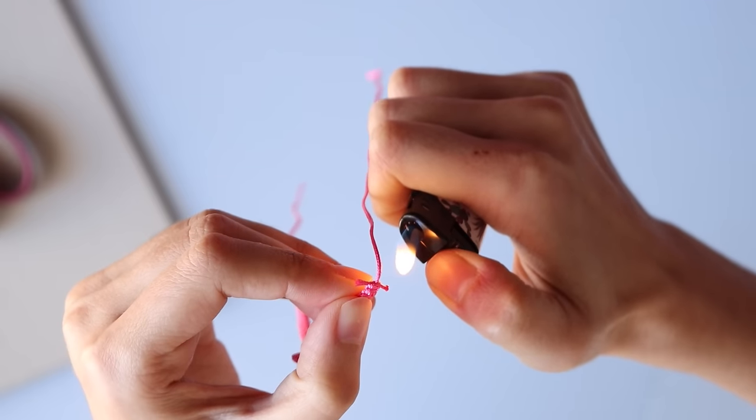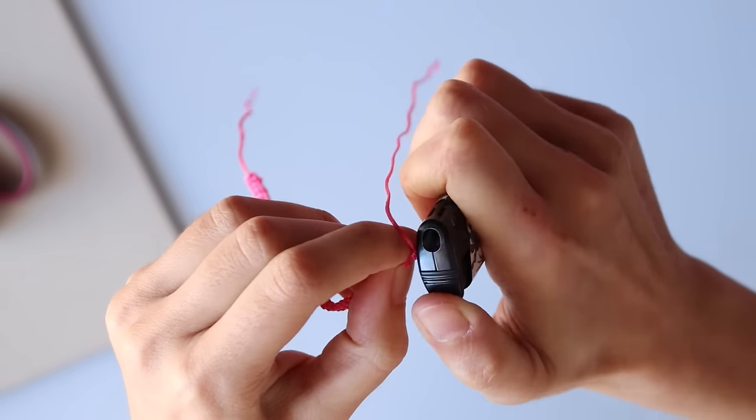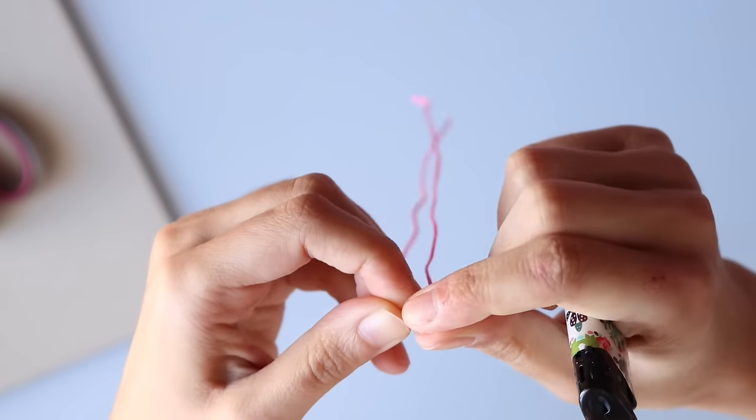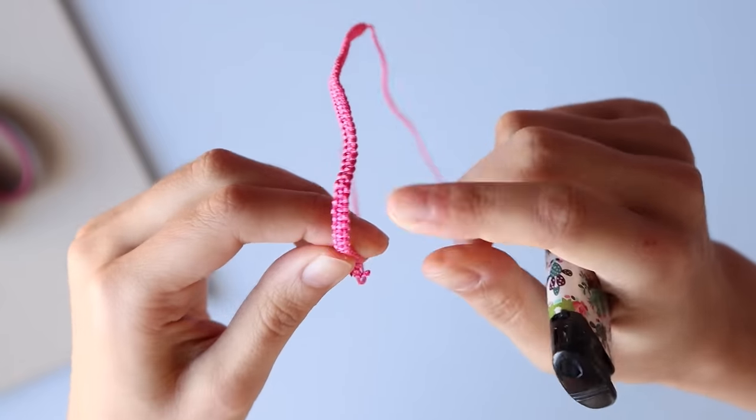The trick here is to not touch the cord to the flame and let it start to melt slowly, then you press it against the lighter to flatten it out.